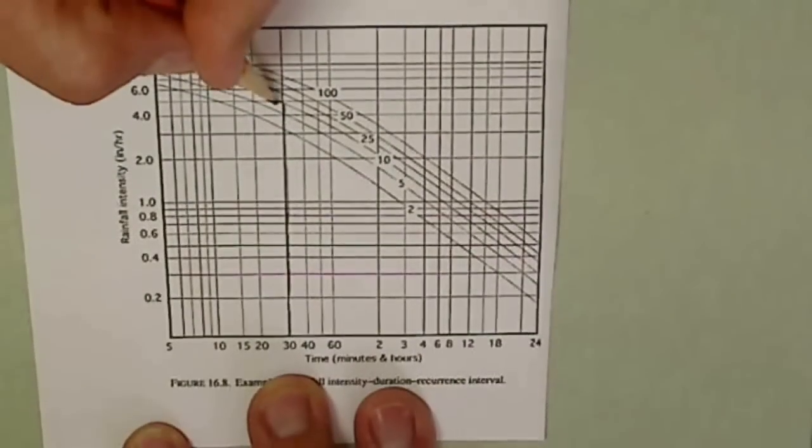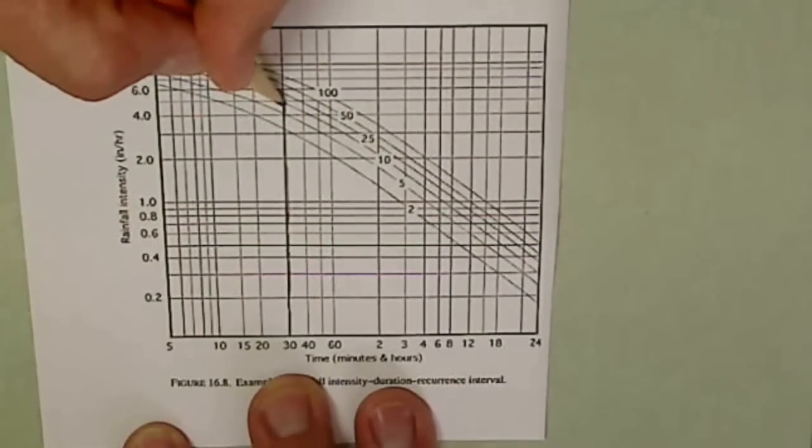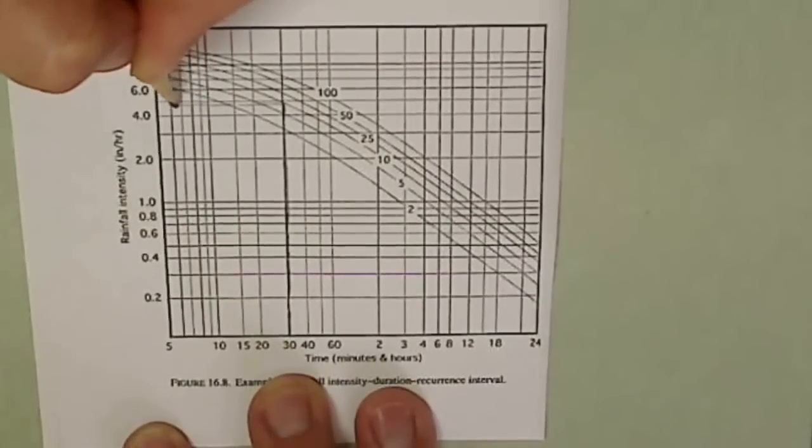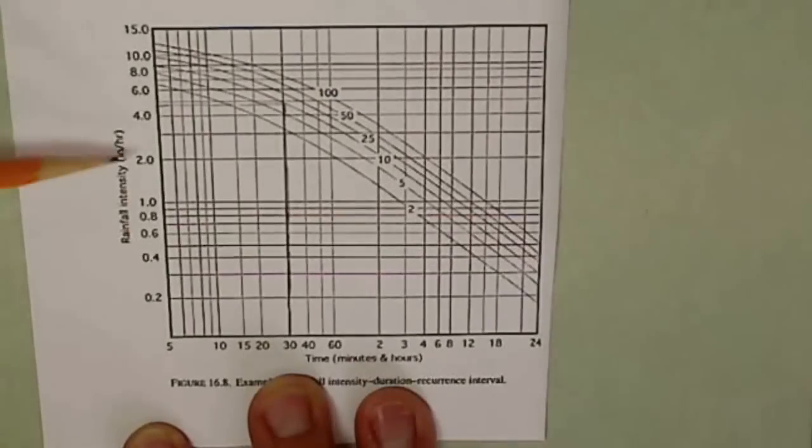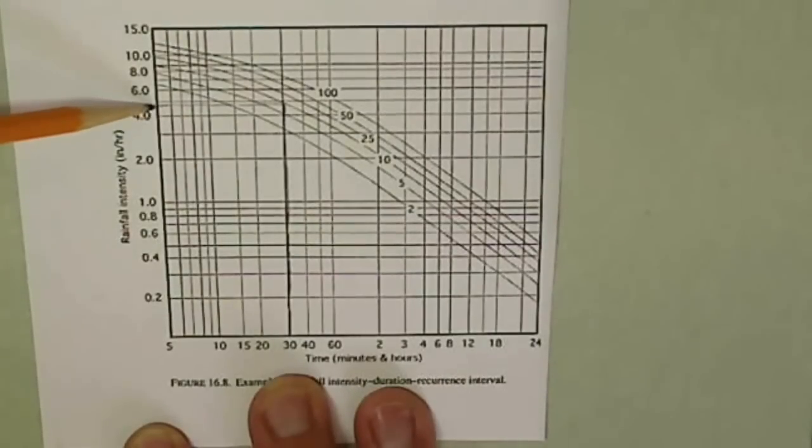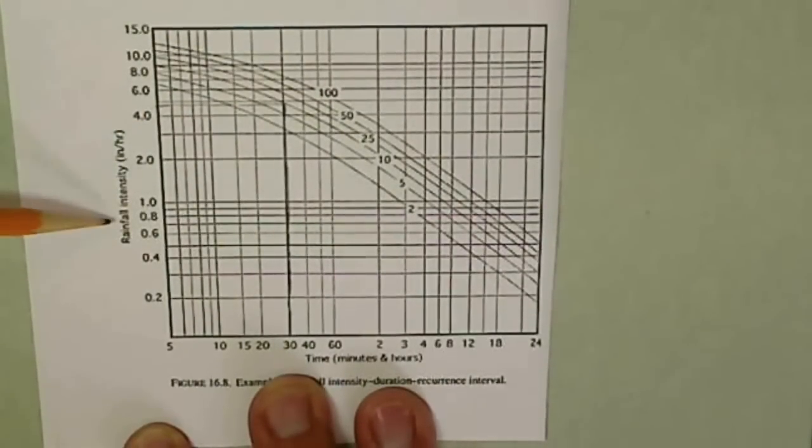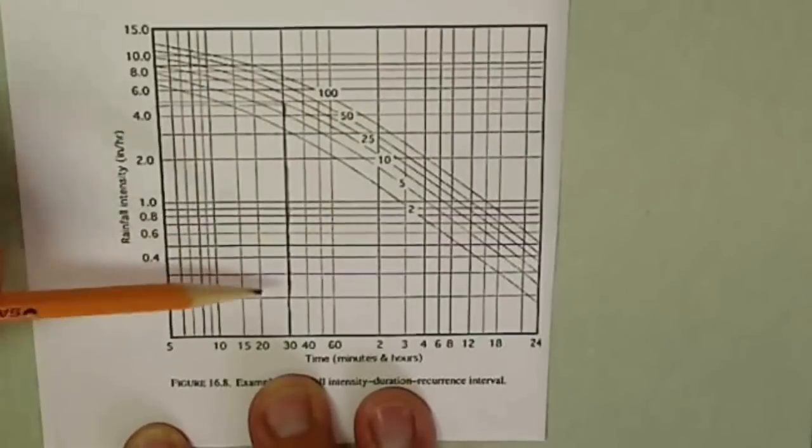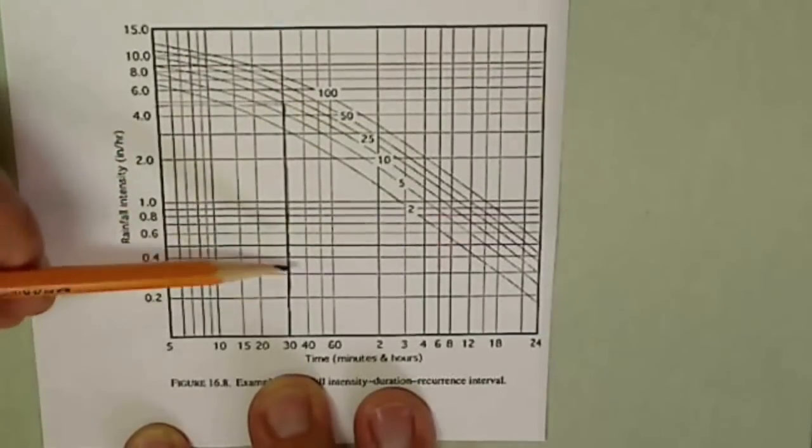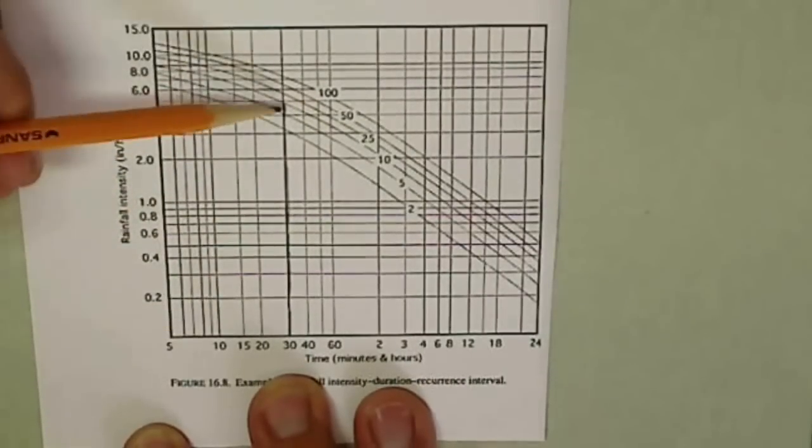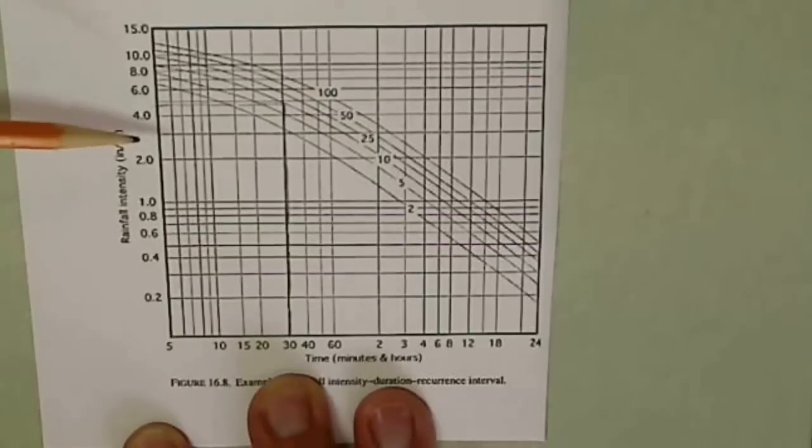And then we would go over to the side at that point where it's almost to this line but not quite. And that would let us know that we would expect to have somewhere in the neighborhood of about 4.8 or 4.9 inches per hour of rainfall intensity in a 30-minute storm that would occur approximately once every 10 years.